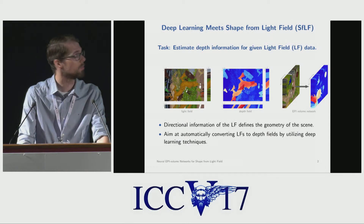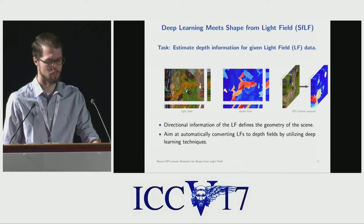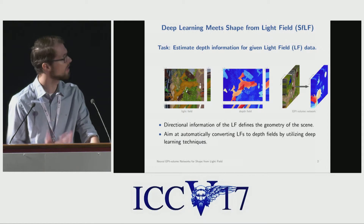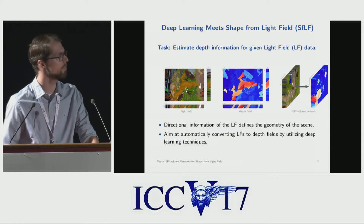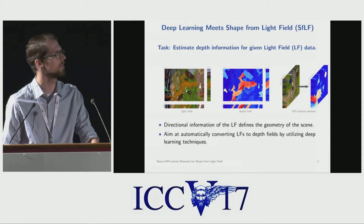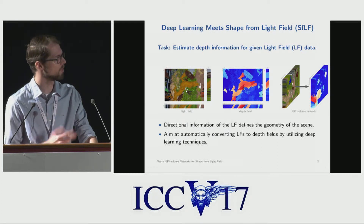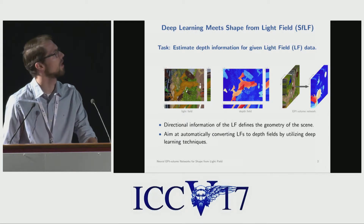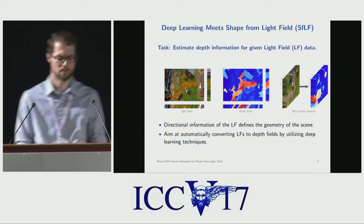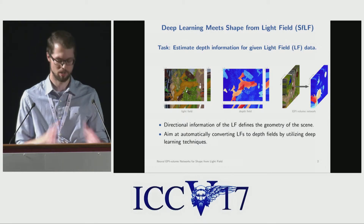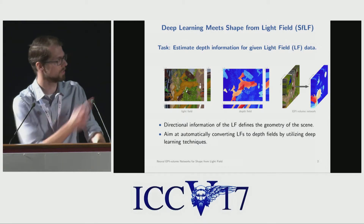What we want to do is predict, based on a given light field, the corresponding depth field, which you see here in the center of the slide in this red-blue color code. And we do this by analyzing so-called epipolar image volumes, which are 3D slices of the light field, which you see here to the right.